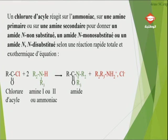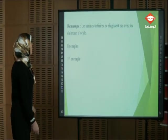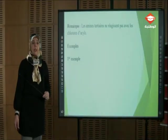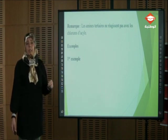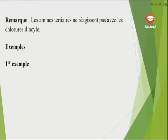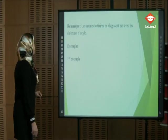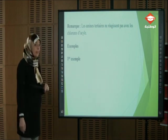Ce principe sera répété tout au long des passages 4 et 5. Remarque importante : notre réactif doit présenter un hydrogène mobile au niveau de l'azote. Si cet hydrogène est remplacé par un groupement alkyl, on passe à une amine tertiaire qui ne peut pas réagir avec le chlorure d'acide. Donc, les amines tertiaires ne réagissent pas avec le chlorure d'acide. Je vais prendre trois exemples : un avec l'ammoniaque, un avec une amine primaire, et un avec une amine secondaire.